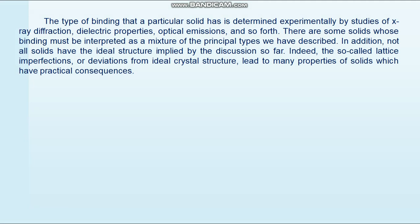The type of binding that a particular solid has is determined experimentally by studies of x-ray diffraction, dielectric properties, optical emissions, and so forth. There are some solids whose binding must be interpreted as a mixture of the principal types described. In addition, the so-called lattice imperfections or deviations from ideal crystal structure lead to many properties of solids which have practical consequences.